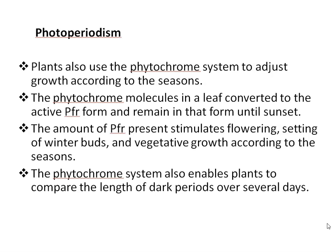Photoperiodism: Plants also use the phytochrome system to adjust growth according to the season. Since unfiltered sunlight is rich in red light but deficient in far-red light at dawn, all phytochrome molecules in the leaf convert to the active PFR form and remain in that form until sunset. Since PFR reverts to PR during darkness, there will be no PFR remaining at sunrise if the night is long (winter), and some PFR remaining if the night is short (summer). The amount of PFR present stimulates flowering, setting off winter buds and vegetative growth according to the season.